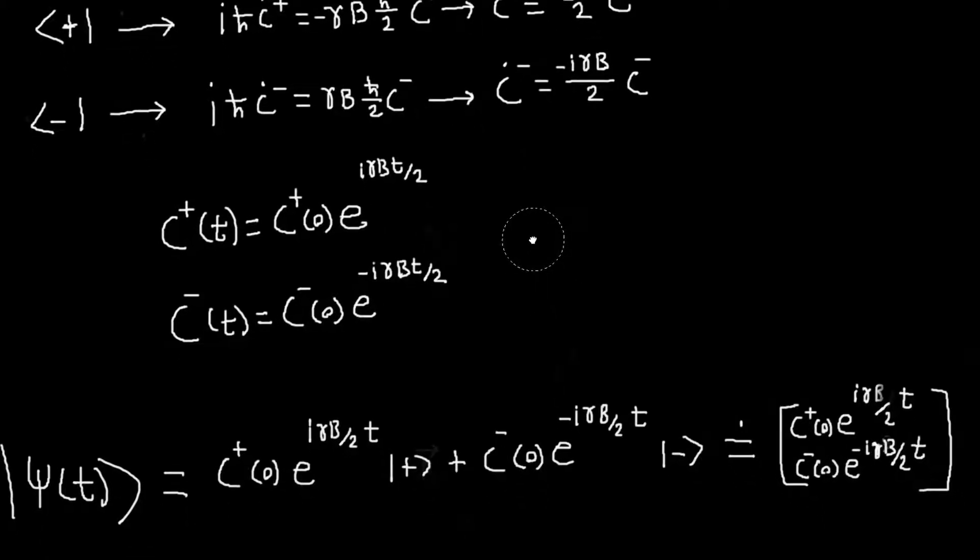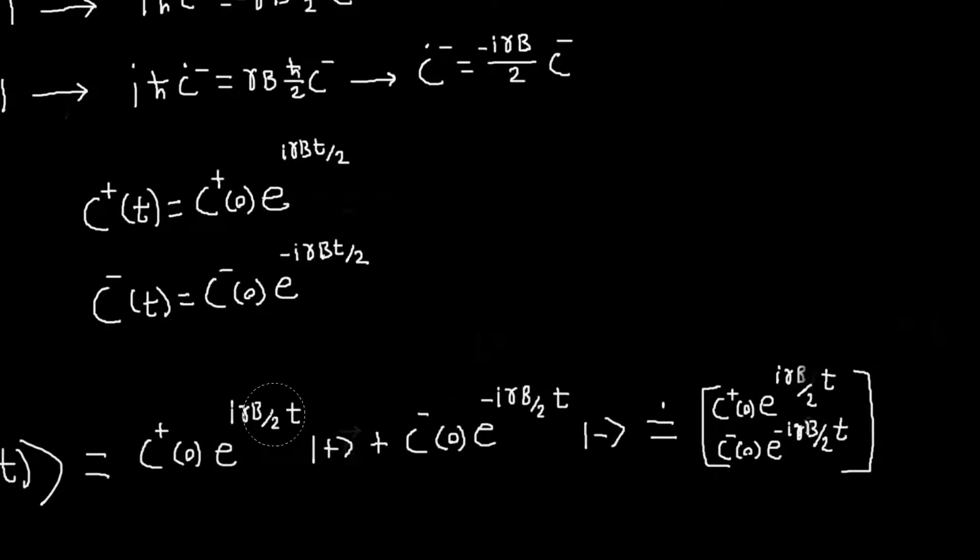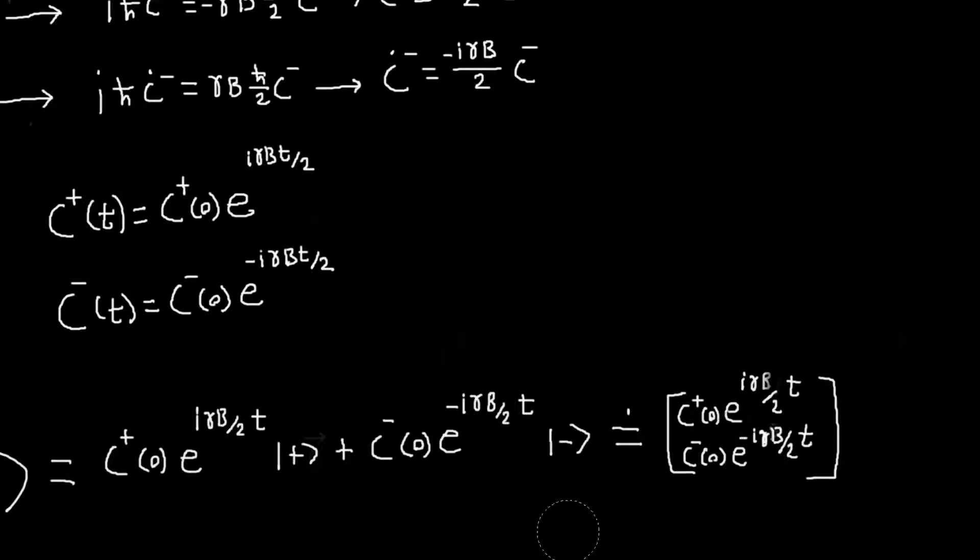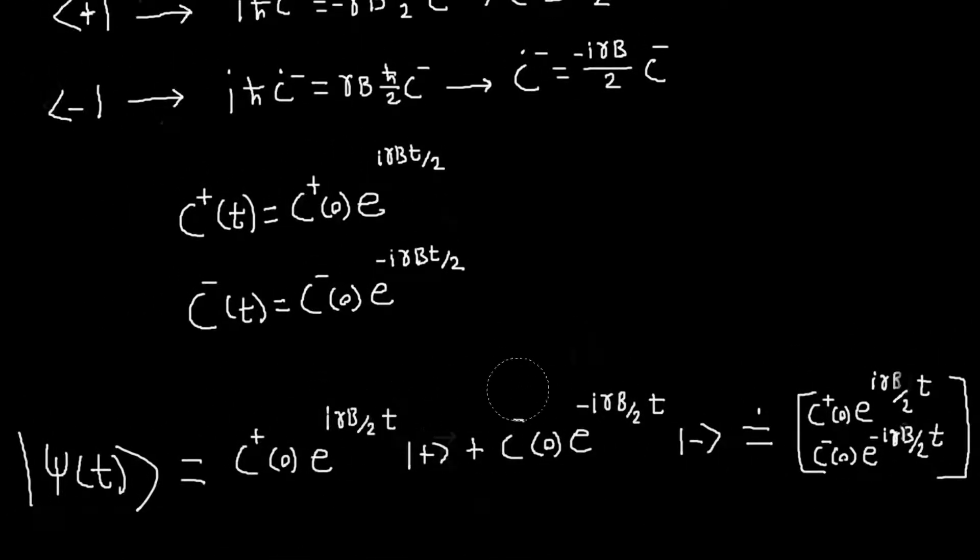But so we've solved the Schrödinger equation, and we have our ket. We could represent it using this column vector. But it's not obvious what this means. How do we know that we've done things correctly? Well, what we can do is we can look at the solution, we can look at the z component of the angular momentum in the classical case, and ask, well, does it look the same in this quantum mechanical solution?